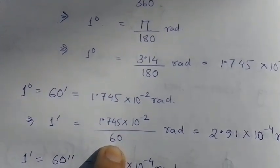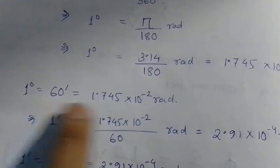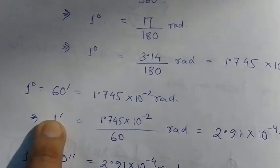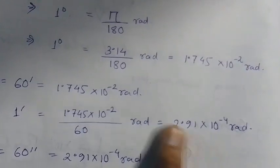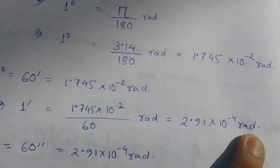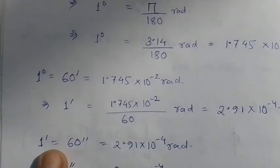For 60 minutes we have this mass, so for one we will have divided by 60 and for that we will get 2.91 into 10 to the power minus 4 radians.